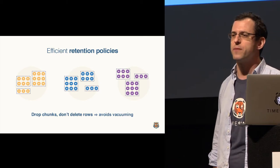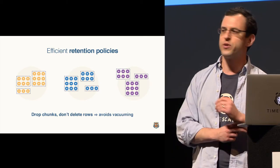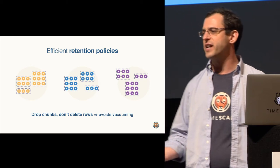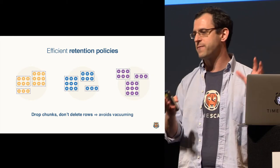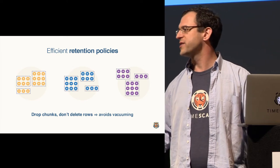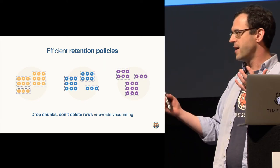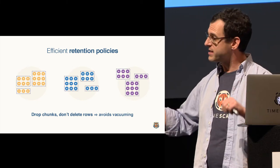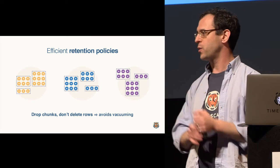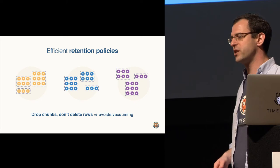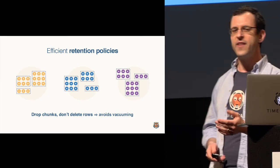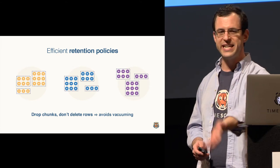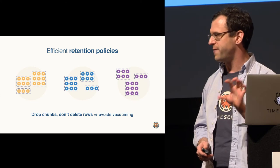The second thing this leads to, which is very important in many time series applications, is efficient retention policies. For example, a thing that's common is I'm only going to keep raw data for a week or a month, and then I'm going to keep aggregates for longer periods. Typically in a single table, this would involve a delete query that would remove individual rows from a table. This would cause fragmentation. Because of these chunks, you could set data retention policies that basically say drop the chunks whose data is older than this period. That's just deleting a file on disk.